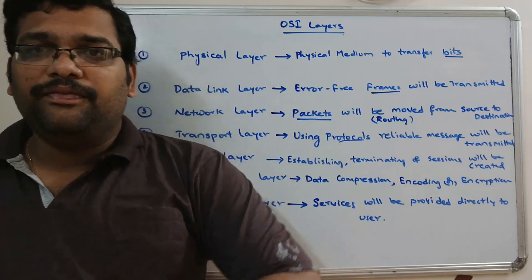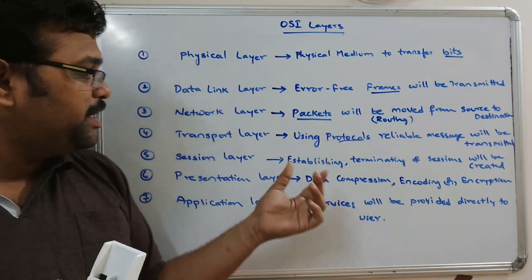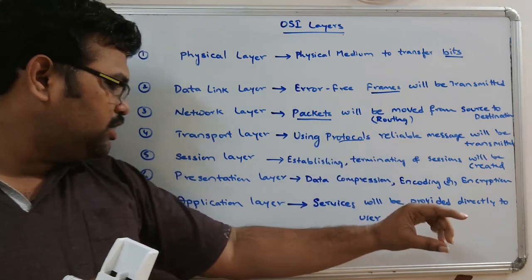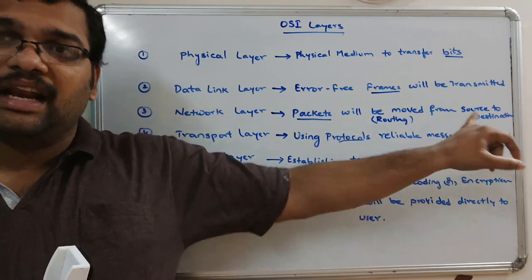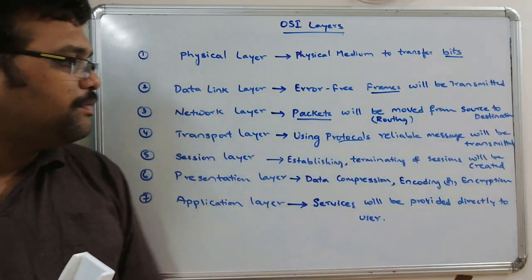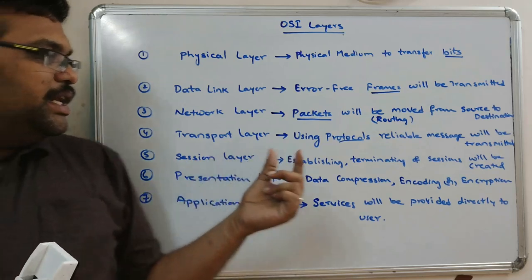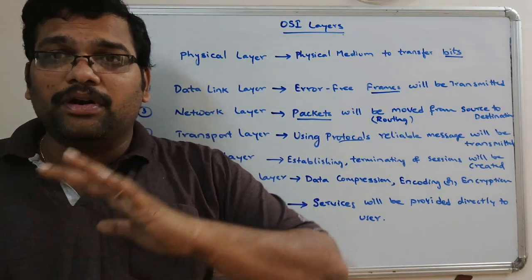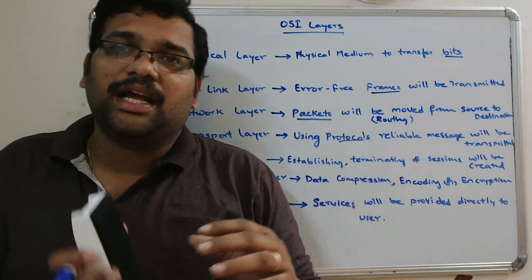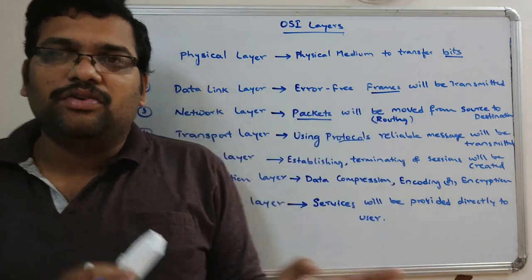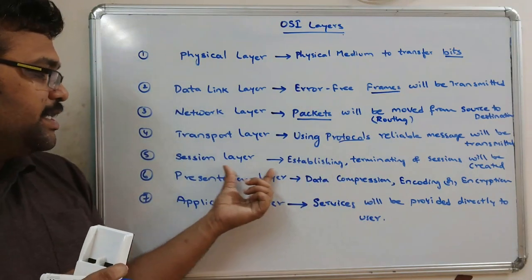In the transport layer, if data is to be transmitted across the network, it must go through protocols. The usage of protocols is handled here, and by using these protocols, reliable messages are transferred from one system to another. In the session layer, before sending the messages the connection is established, and after sending the messages the connection is disconnected. All connection establishments and terminations are done in the session layer.